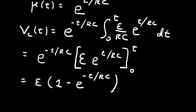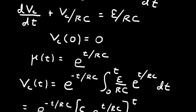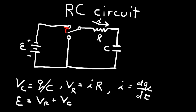When t equals 0, the voltage across the capacitor is 0. As t goes to infinity, with timescale RC, the exponential term drops to 0, and we end up with the voltage across the capacitor being E. Let's go back to our circuit diagram.